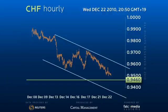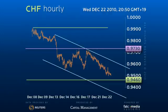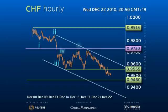This count assumes wave 1 ended with the 335 point drop at 97.30, wave 2 with the 99.15 pullback, wave 3 with the 360 point decline to 95.55, and wave 4 with the recent rally to fail 97.30. Thus, we have to be wary of a 5 wave decline that finds support in the 94.60 to 93.90 range.